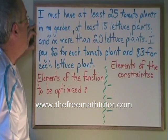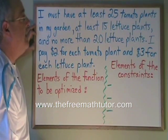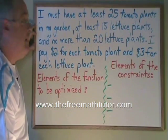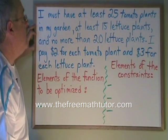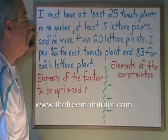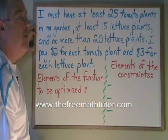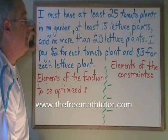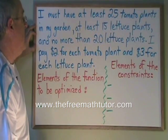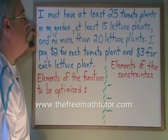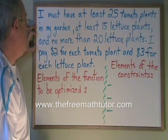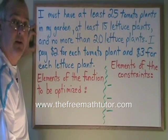In this problem, I must have at least 25 tomato plants in my garden, at least 15 lettuce plants, and no more than 20 lettuce plants. I pay two dollars for each tomato plant and three dollars for each lettuce plant.